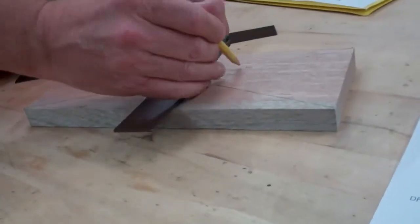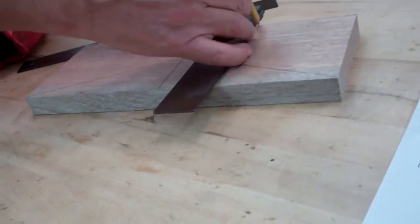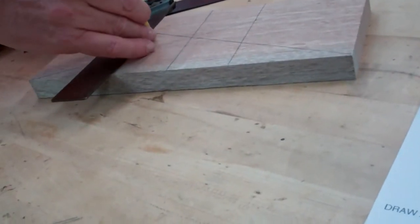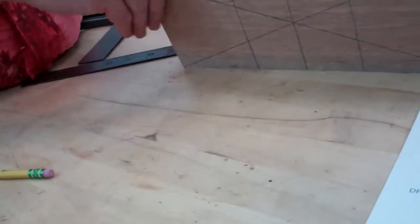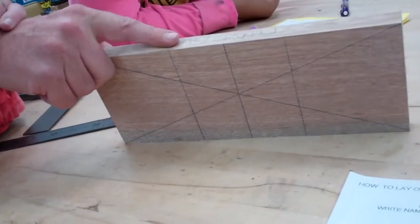Then you want to draw those straight up. The next part you want to make sure that you know where your name is because that's the side you're going to measure from.